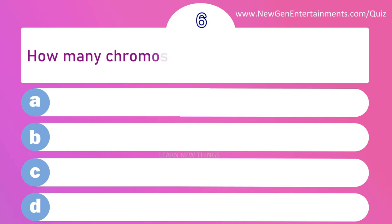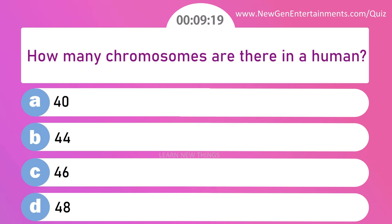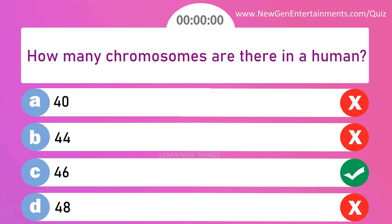How many chromosomes are there in a human? Options are: A) 40, B) 44, C) 46, and D) 48. Answer is option C: 46.